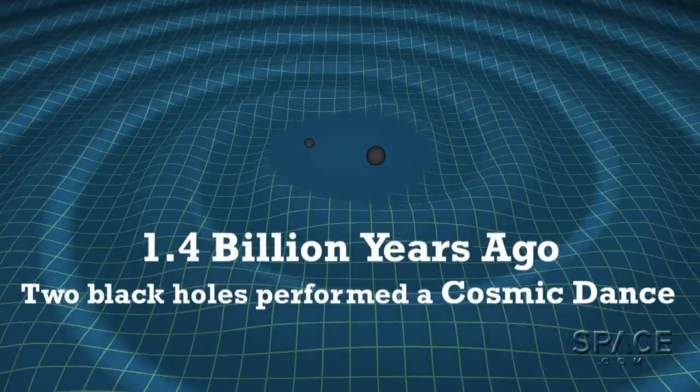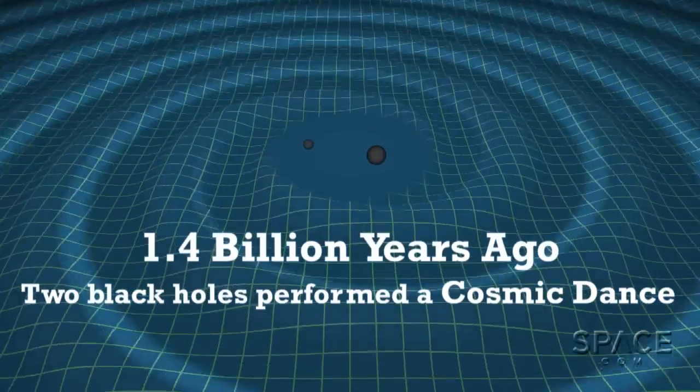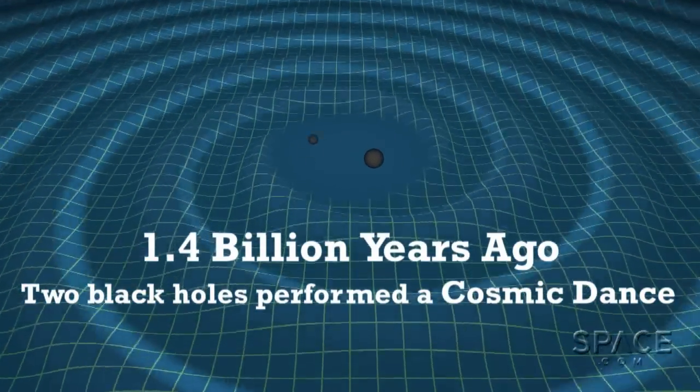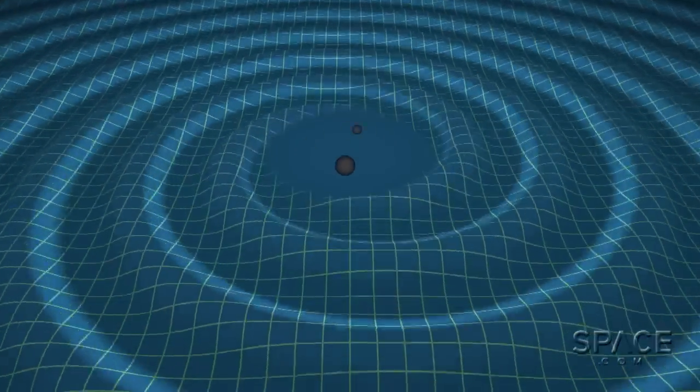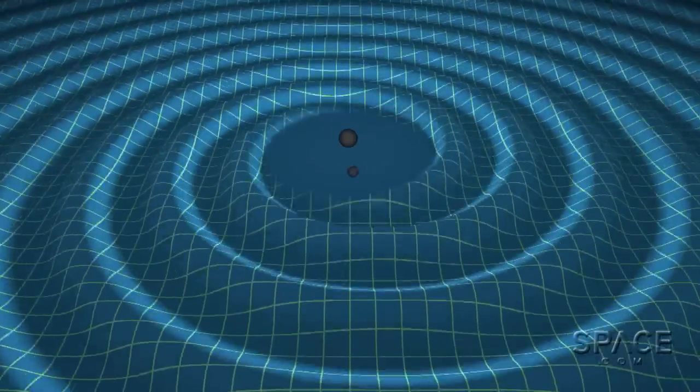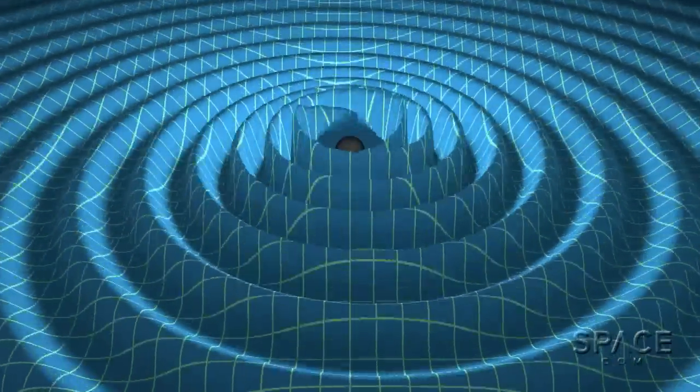1.4 billion years ago, two black holes performed a cosmic dance. They spun around one another, coming closer and closer together until finally they collided. This dance created ripples in the fabric of space and time, also known as gravitational waves.